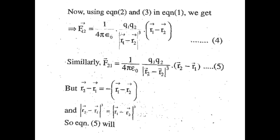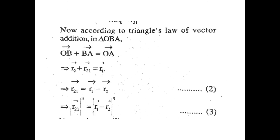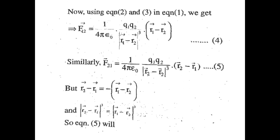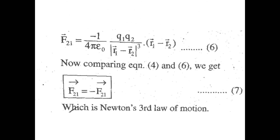Now, r2-vector − r1-vector = −(r1-vector − r2-vector), and |r2-vector − r1-vector| = |r1-vector − r2-vector|. Therefore, F21-vector = −(1/4πε₀)·(q1·q2)/|r1-vector − r2-vector|³·(r1-vector − r2-vector). Comparing Equations 4 and 6, we get F21-vector = −F12-vector, which proves Newton's third law of motion.